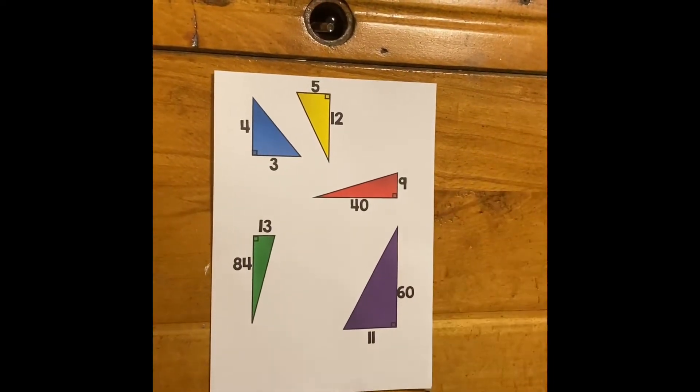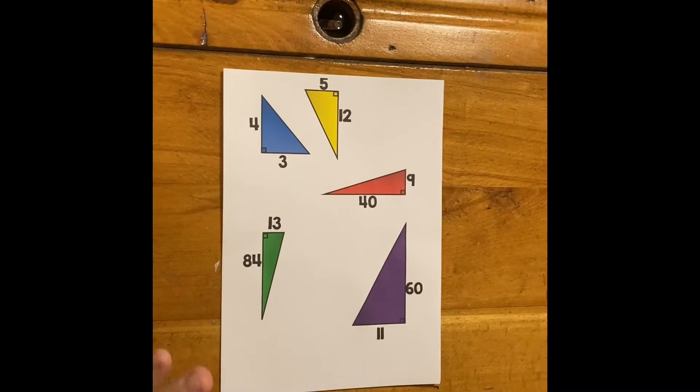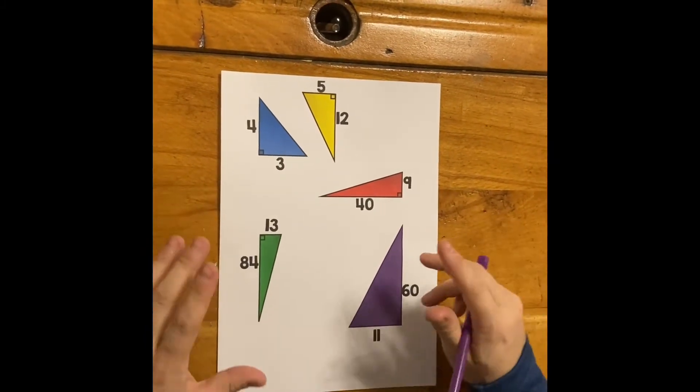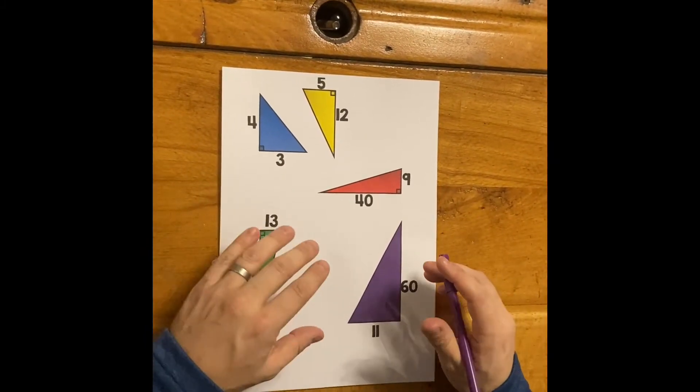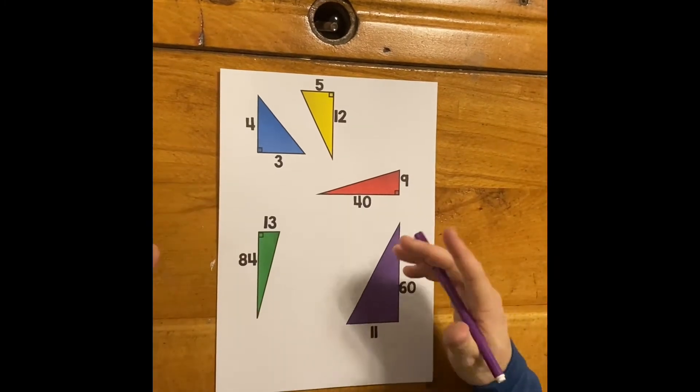So here's some examples using some famous Pythagorean triples. Usually for Pythagoras theorem, you'd be squaring sides and adding them together to get the hypotenuse.